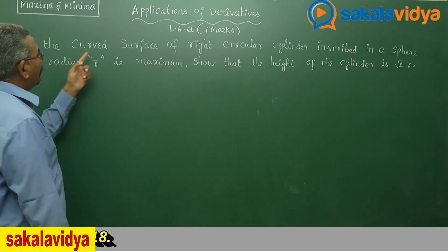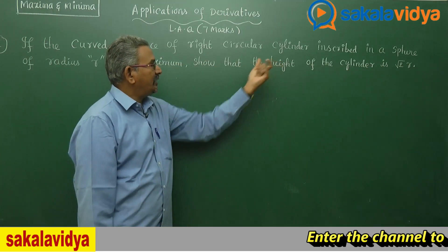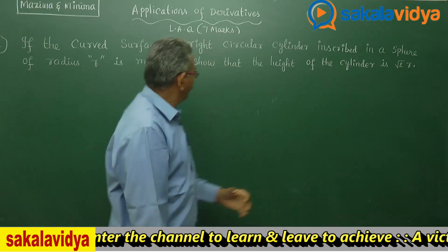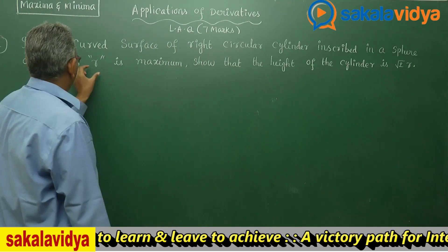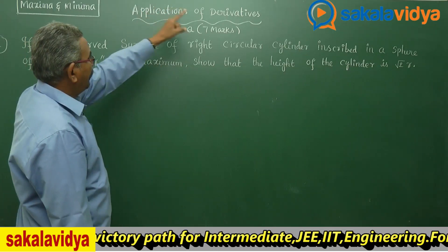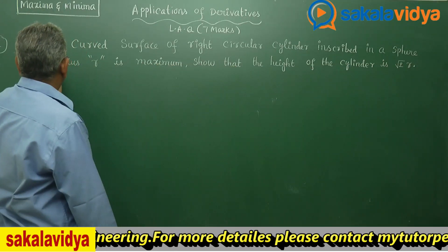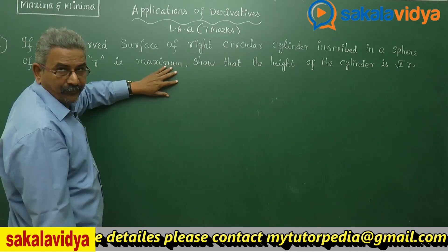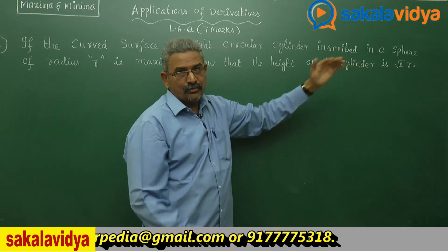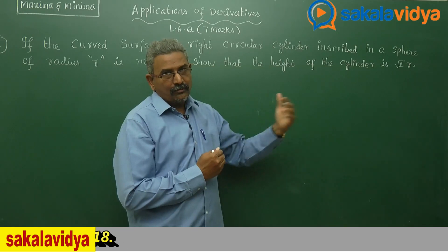If the curved surface of a right circular cylinder inscribed in a sphere of radius small r is maximum, that means the surface area of a circular cylinder which is inscribed in a sphere of radius r is maximum, then we have to show that the height of the cylinder is root 2 times its radius r, that is root 2r.